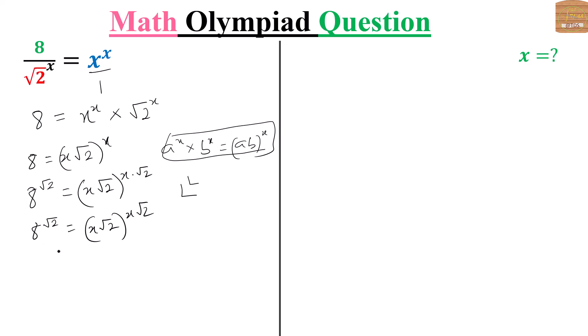Let's adjust the left hand side so that it also behaves like the right hand side. 8 can be written as 4 times 2. We have root 2 times 2.